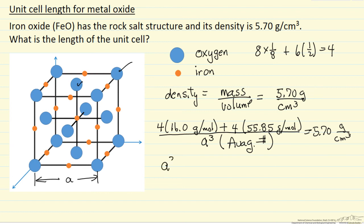let's solve for A cubed. 287.4 grams per mole divided by 5.70 grams per centimeter cubed, and multiply by 6.023 times 10 to the minus 23rd per mole, so that units are going to be consistent.